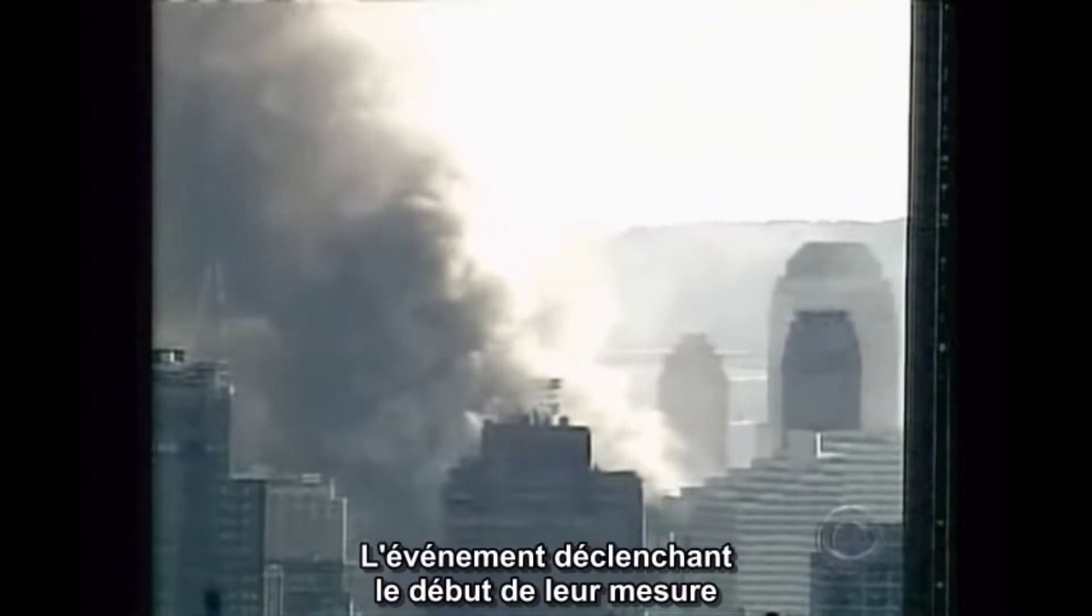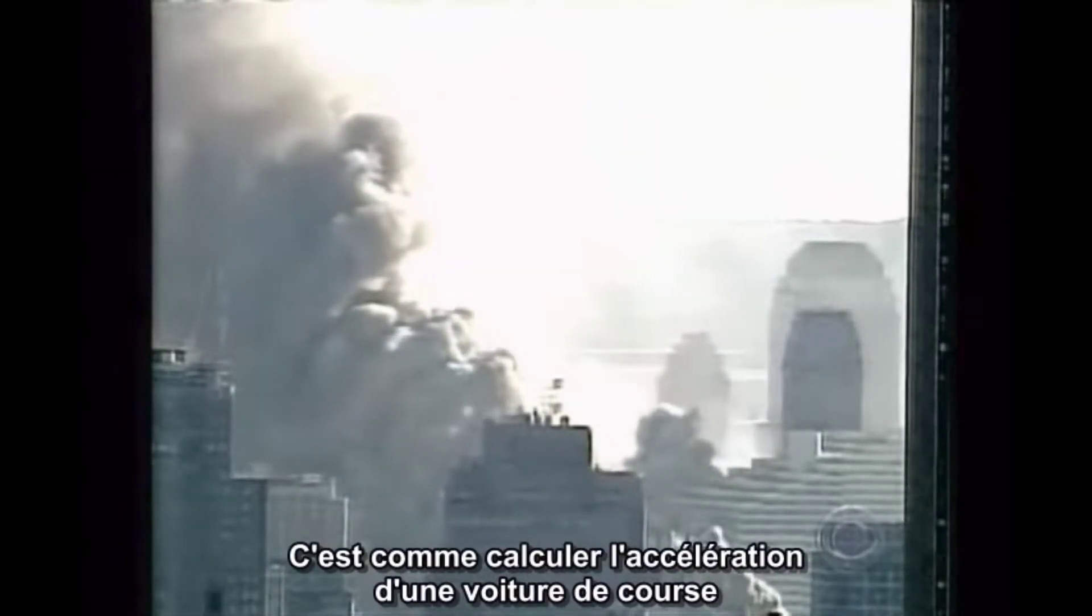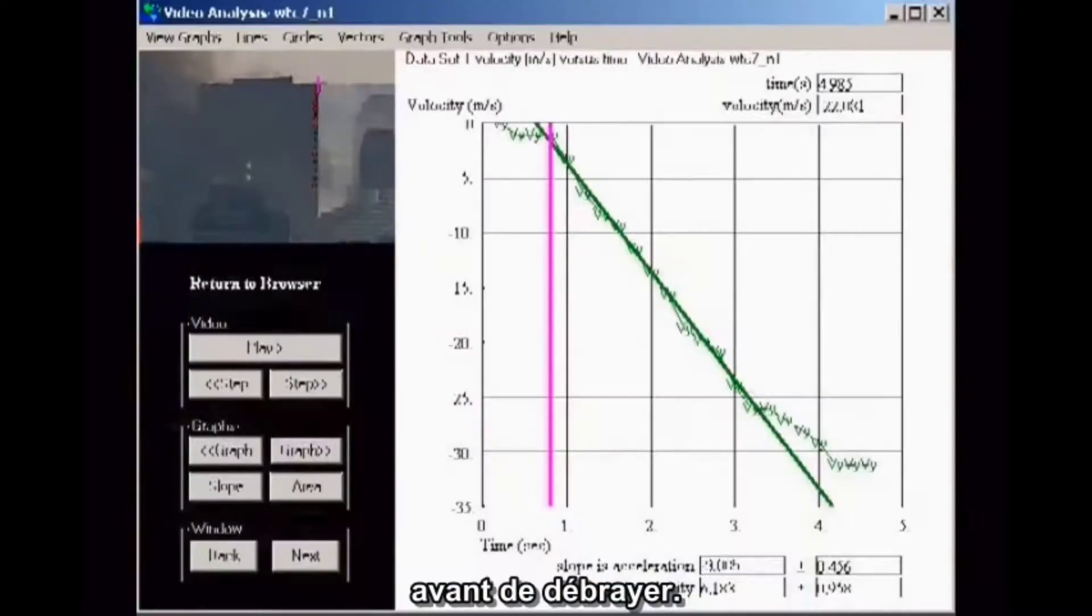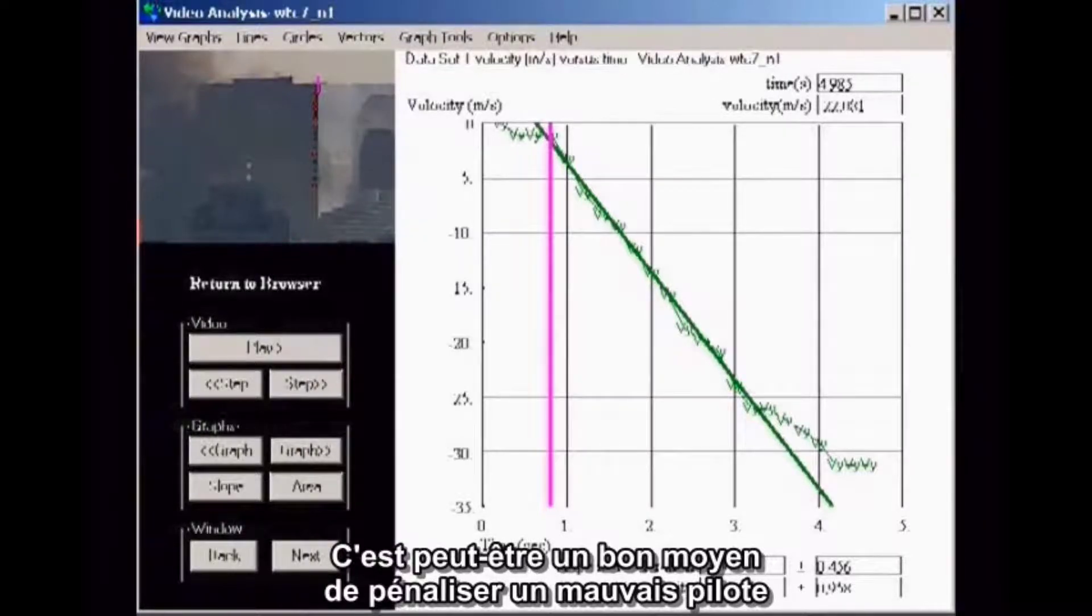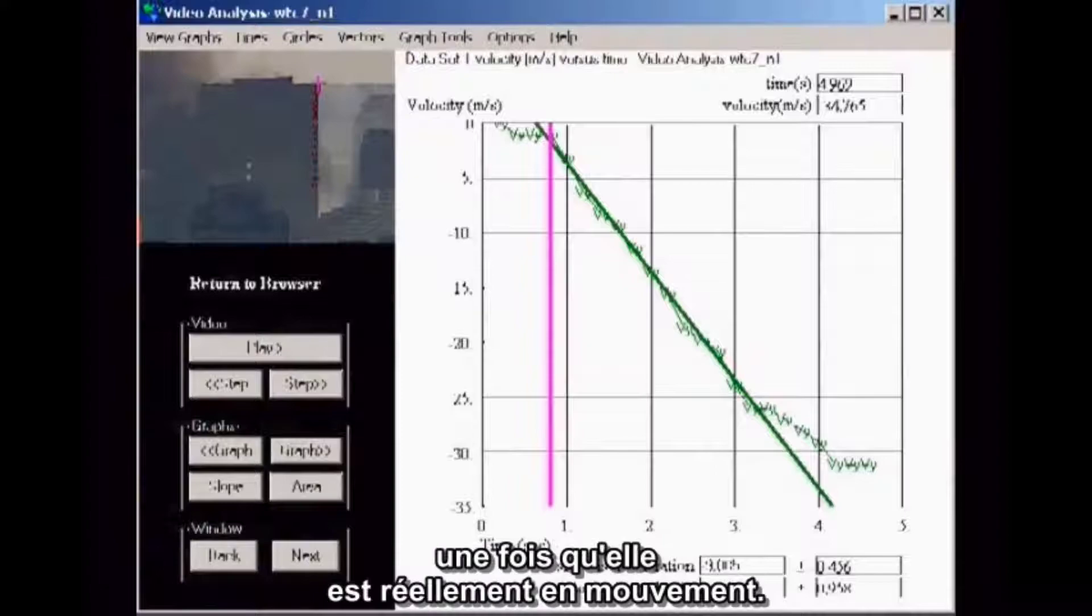But what was going on during this time is qualitatively different from what happened moments later. The event triggering the start of their measurement could more accurately be described as precursor movement. This is like timing the acceleration of a car in a drag race, where the starting light goes on, then the driver revs his engine a few times before letting out the clutch. It may be a fair way to penalize a sloppy driver, but it doesn't say anything about the acceleration of the car once it is actually moving.